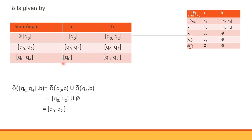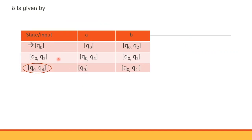Continuing the transition table: {q0, q2} on a gives {q0, q4}; and {q0, q4} on input gives {q0, q2}. We have to fix the transition diagram and then fix the transition table. The states involved are Q0, Q2, and Q4, covering entries for each input symbol.